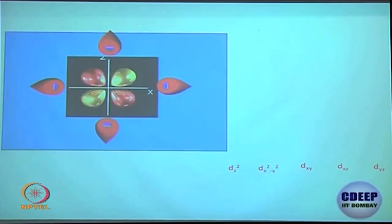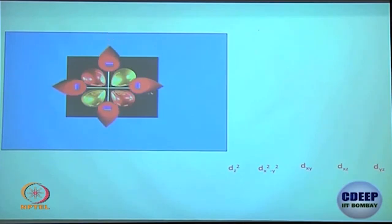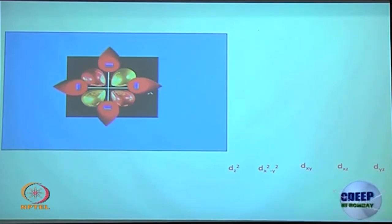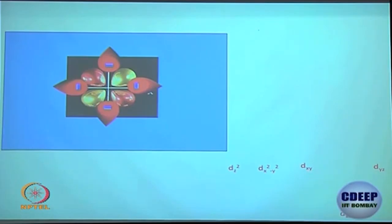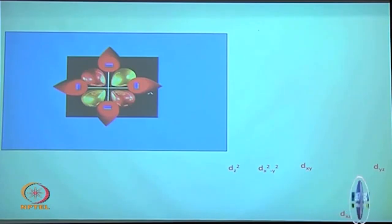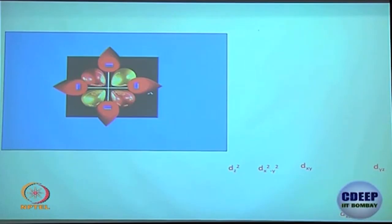All other d-orbitals — d_xy, d_xz, and d_yz — are not facing the ligands directly, as clearly visible; they sit right in between. For example, d_xz (and similarly d_xy and d_yz) are thereby relatively stabilized with respect to d_z² and d_x²-y².